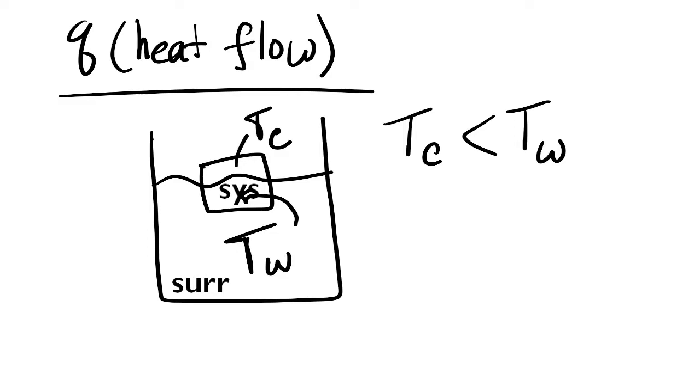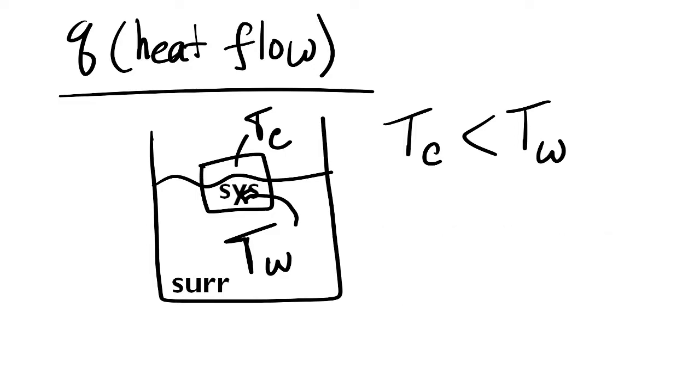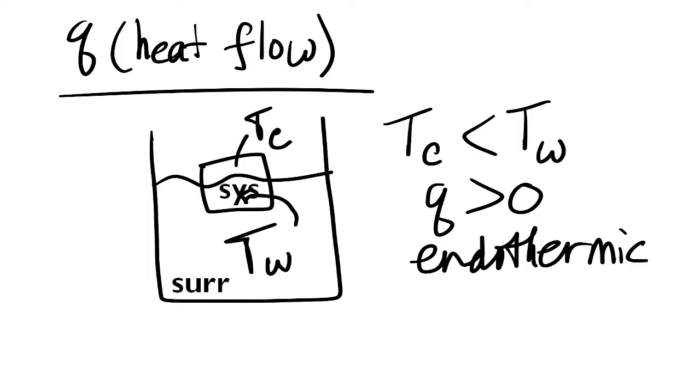Heat flow is going to occur from the water into the ice cube. With the ice cube being our system, the heat flow is going into our system. This is what we call an endothermic process, a process where heat is absorbed into the system. In this case, we would write that the heat flow is positive, or an endothermic process, and there's heat absorption going on into the system.